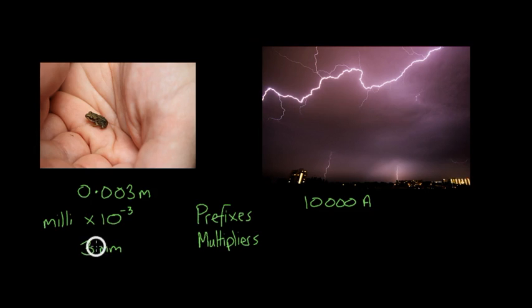Because if the decimal point is there to start with, then multiplying by a thousandth, that's times 10 to the minus 3, would move it three spaces to the left. And that would give us 0.003 metres. So, milli is just multiplying the number by a thousandth.